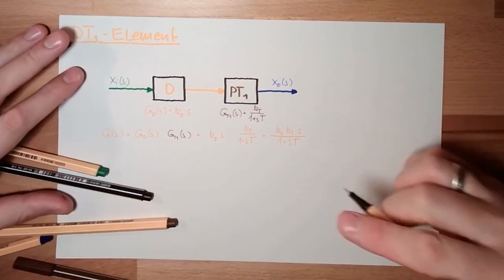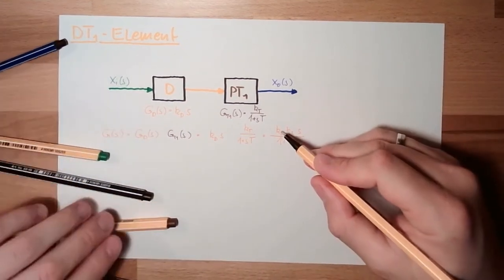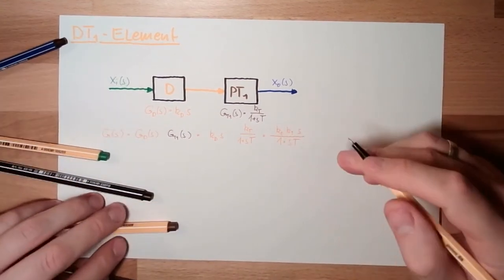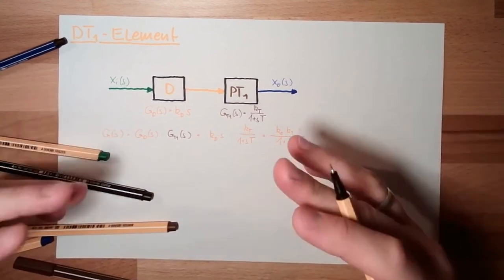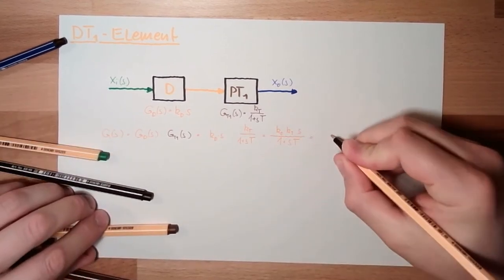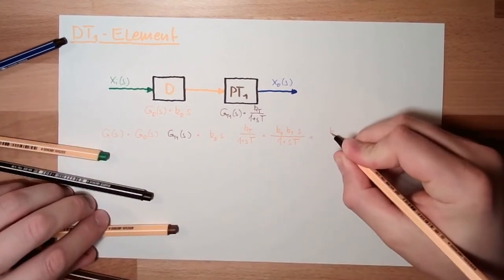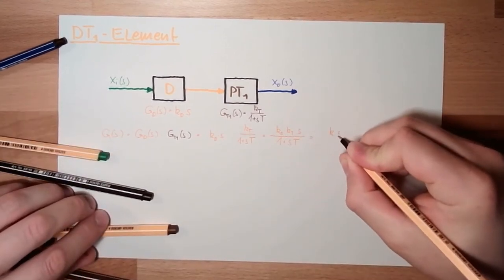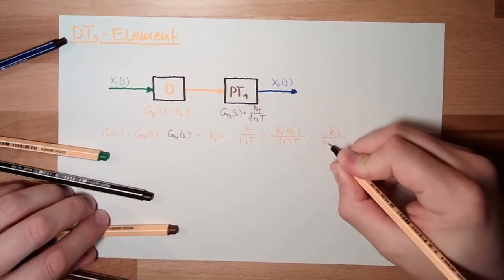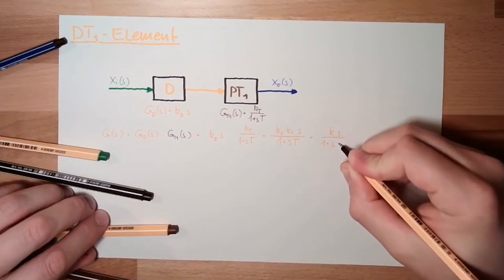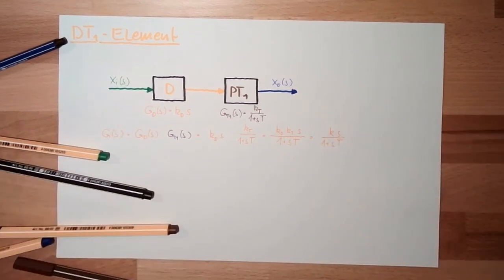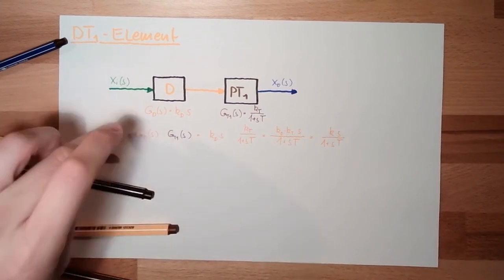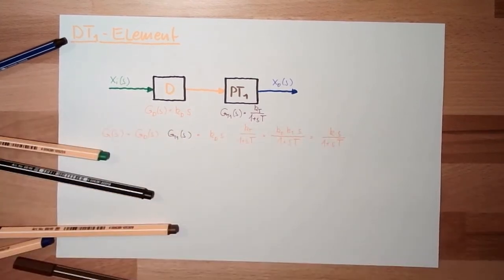Now let's have a look at this. A constant multiplied by a constant — two constants multiplied — is a new constant. So basically this simplifies to K multiplied by s divided by (1 + sT). This is the transfer function of the dt1 element.